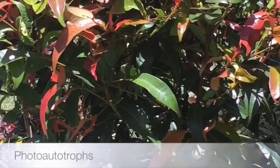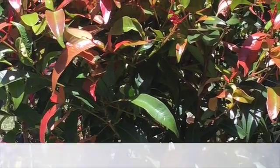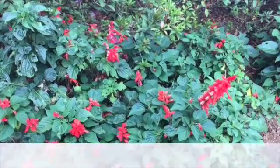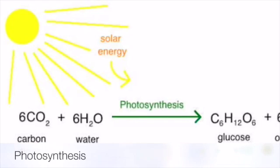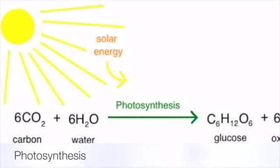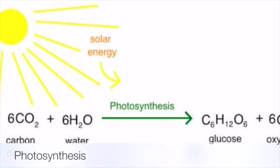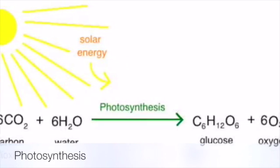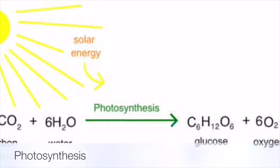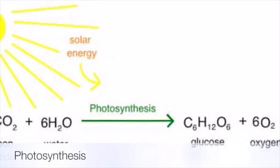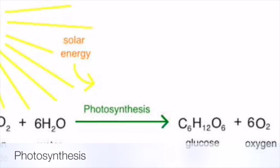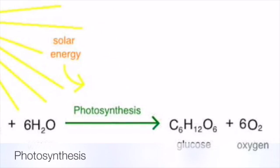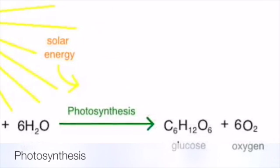Photoautotrophs make use of the sun's energy to convert carbon dioxide into simple organic compounds. This is done through the process of photosynthesis, resulting in oxygen as the released byproduct and fixation of carbon dioxide into simple sugars. The net effect of this chemical reaction is the use of six molecules of water and the production of six molecules of oxygen for every six molecules of carbon dioxide that are transformed into one molecule of sugar.